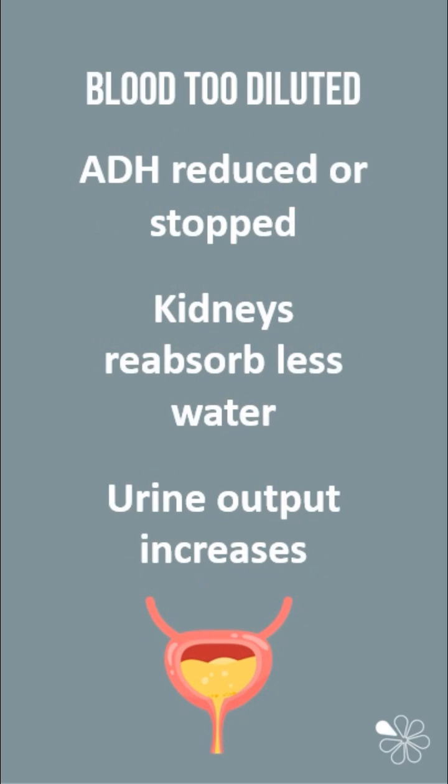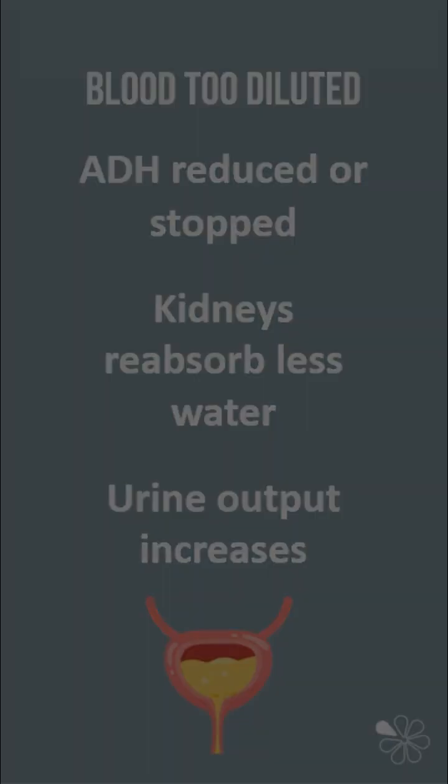In comparison, if the blood is too diluted, this is due to high water levels. The hypothalamus will signal the pituitary gland to reduce or stop the release of ADH, meaning the kidneys reabsorb less water. As a result, more water is excreted in larger volumes of dilute urine, helping to restore the balance of water and solutes in the blood.